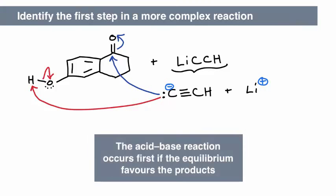In general, the acid-base reaction will occur first if the equilibrium favours the products. If the acid-base equilibrium favours the starting materials, then this step is not likely to be the first one in the reaction.